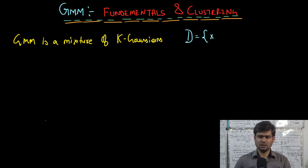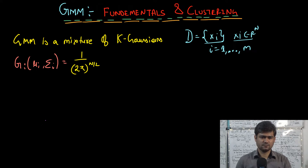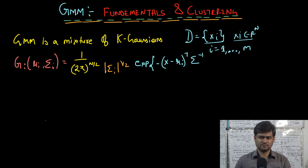If we have a dataset x_i where each x_i is an n-dimensional real vector and i goes from 1 to m — that is, we have a dataset of m data points where each data point is an n-dimensional real vector — then each Gaussian component is going to be a multivariate Gaussian. Each Gaussian g_i with mean mu_i and covariance matrix sigma_i is given by: 1 over (2*pi)^(n/2) times |sigma_i|^(1/2) times e raised to the power negative of (x - mu_i)^T * sigma_i^{-1} * (x - mu_i) / 2.